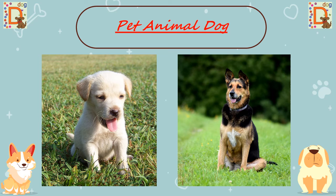Do you know what the young one of a dog is called? The baby of a dog is called a puppy. Dogs give birth to many puppies at one time, children. The puppies like to be with their mother all the time, and they drink milk when they are young — just like you drink milk to get strong bones. Similarly, these young ones, the puppies, also drink milk when they are young.